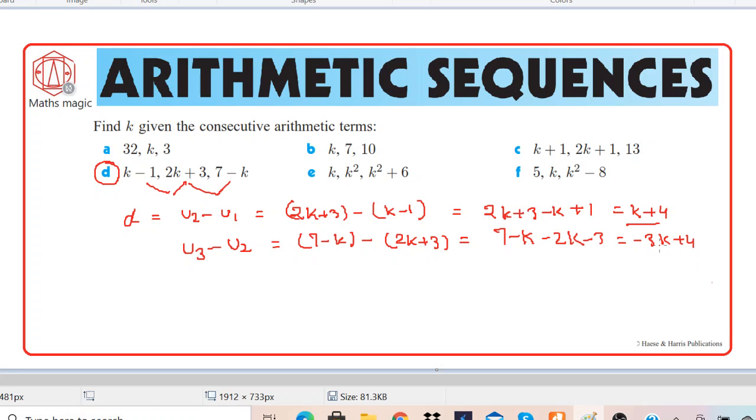So we got two common differences: k plus 4 and negative 3k plus 4. Since these are the common differences of the same sequence, therefore these common differences are equal.